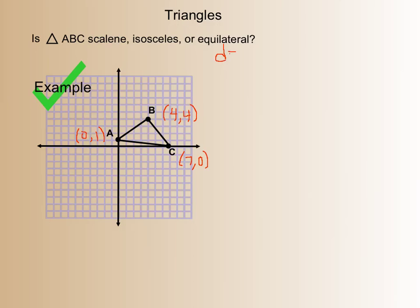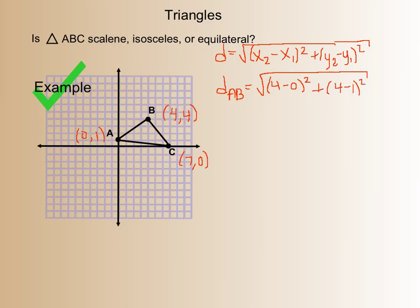And then the other thing we need is we need the distance formula, which is square root of x2 minus x1 squared plus y2 minus y1 squared. So first thing, let's find the distance between points A and B. So distance between A and B is going to be 4 minus 0 squared, because that's our two x coordinates, plus 4 minus 1 squared. That's our two y coordinates. And that's going to equal square root of 4 squared plus 3 squared, which is the square root of 16 plus 9, which is square root of 25, which gives me 5. So I know the distance of A, B is 5.